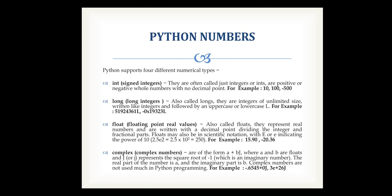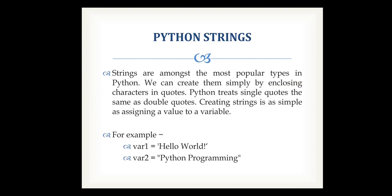Next is Python string. Strings are among the most popular types in Python. We can create them simply by enclosing characters in quotes. Python treats single quotes the same as double quotes. For example, var1 can be 'Hello World' using single quotes, and var2 can be 'Python Programming' using double quotes — both are the same thing.